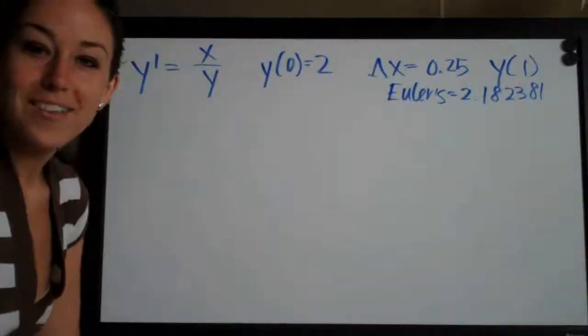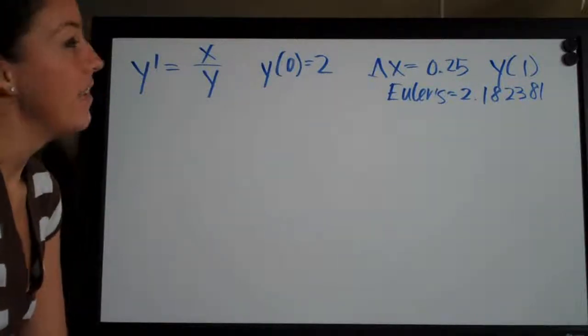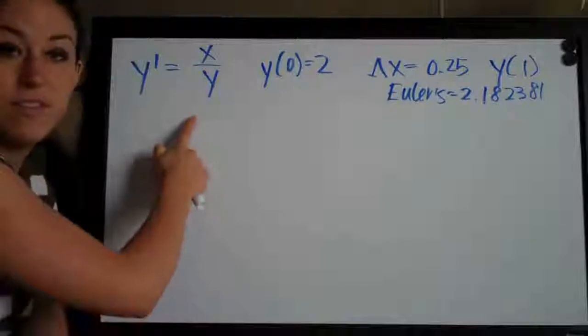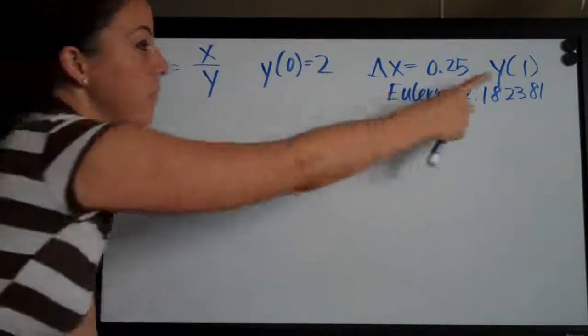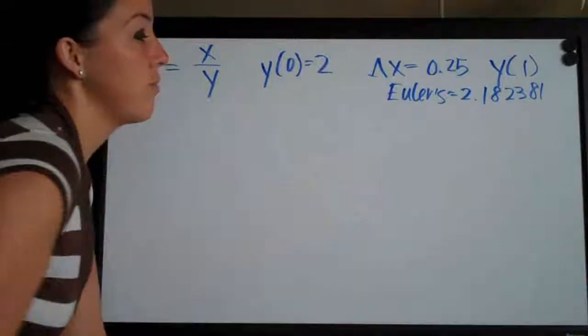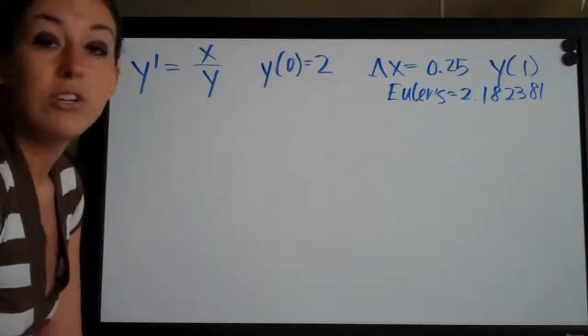Hi everyone! Welcome back to integralcalc.com. In the previous problem, we did a Euler's method approximation of this function at y(1) and the answer we got was 2.182381, which we rounded to 2.18.